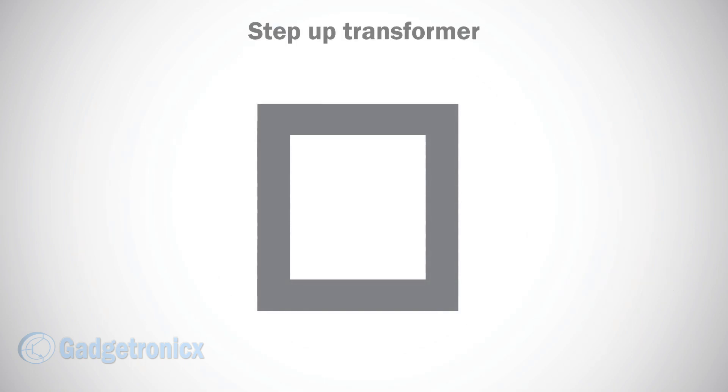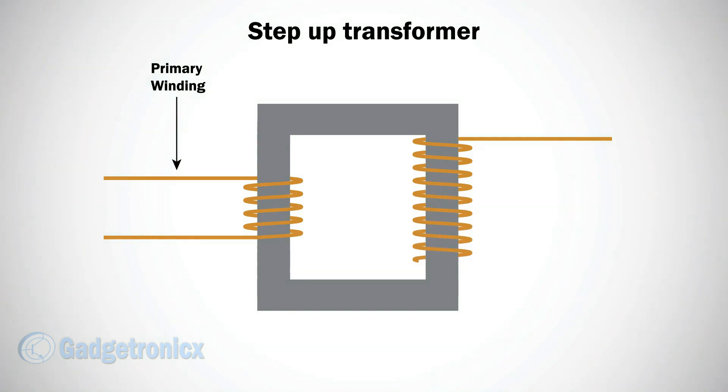Consider another transformer which has 5 windings in primary coil and 10 windings in secondary coil. Here a voltage source of 110V is applied to the primary side.